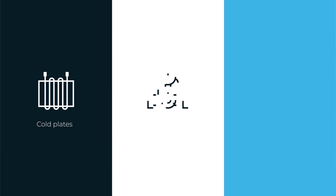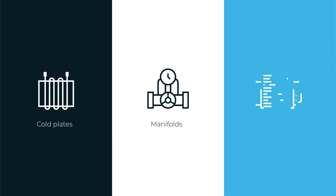Here's an overview of how our implementation makes it so simple and scalable. Essentially, we are very much like a single-phase, direct-on-chip based solution. For instance, we use cold plates, we use manifolds, and we use condensers versus radiators. And on the surface it actually looks pretty similar, except that the similarity stops there.